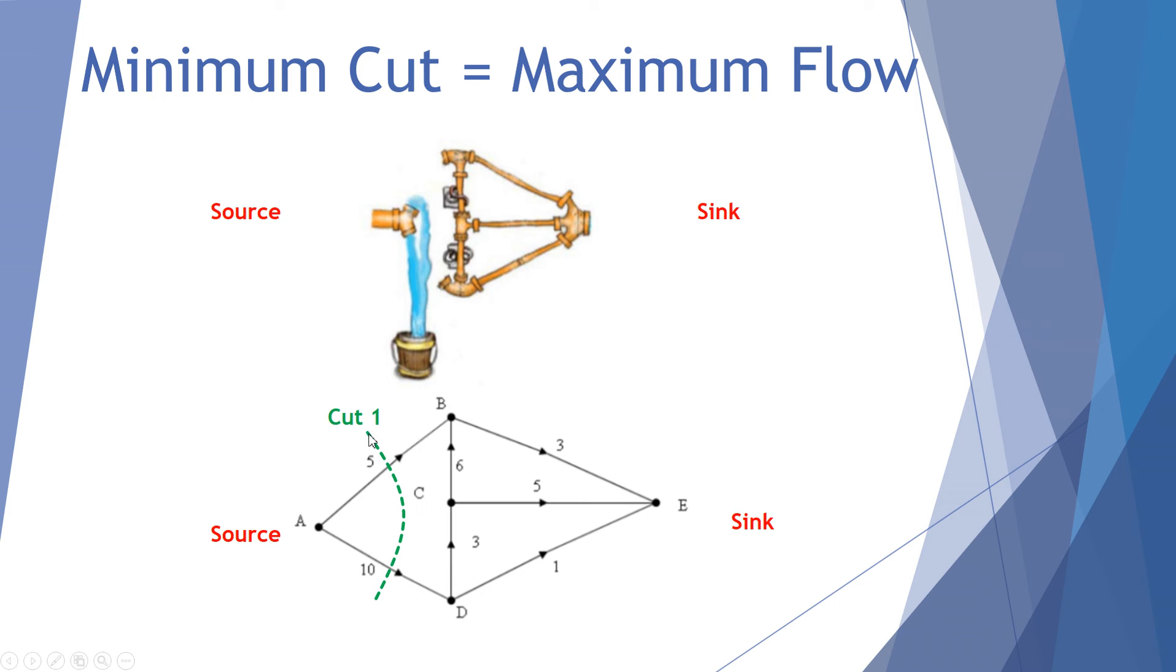Now we can calculate a capacity or a value for that cut. So cut number 1 from the bottom, it cuts through the value of 10 from A to D, so 10 is included. Then we go up and it cuts across the line with a weighting of 5. 10 plus 5, so cut 1 has a capacity of 15.